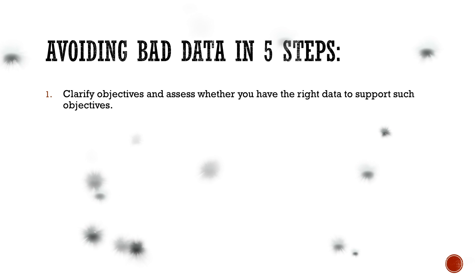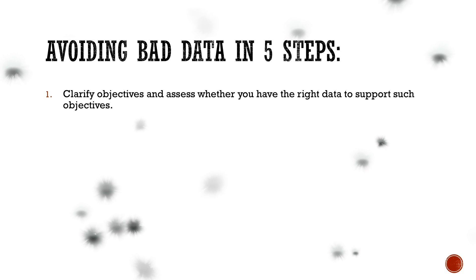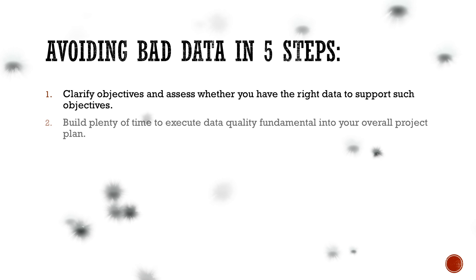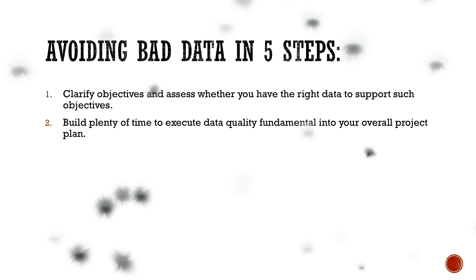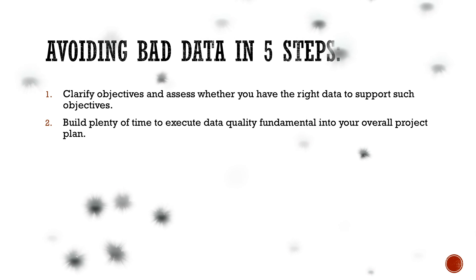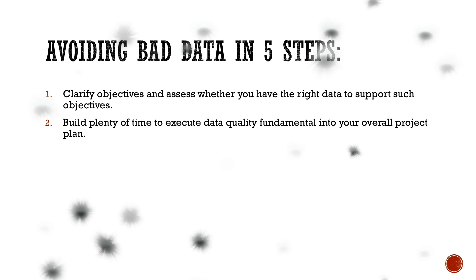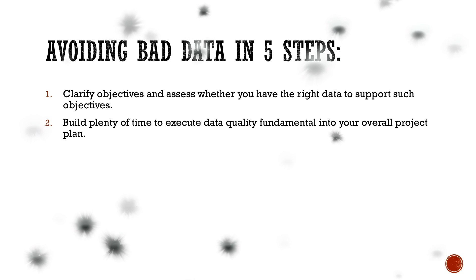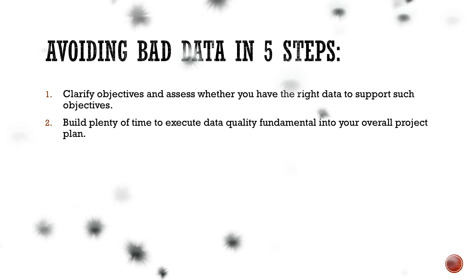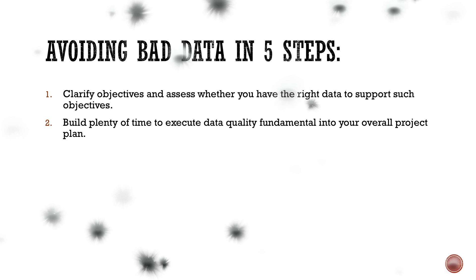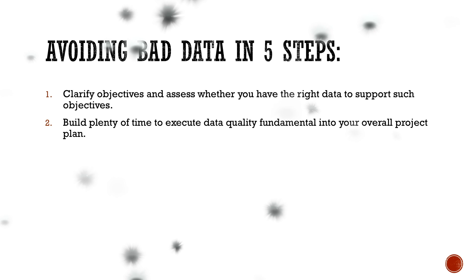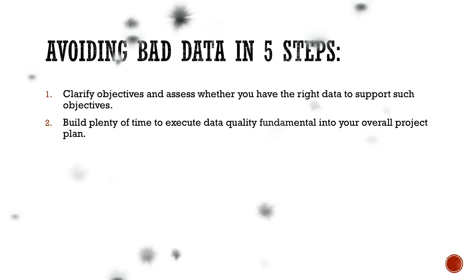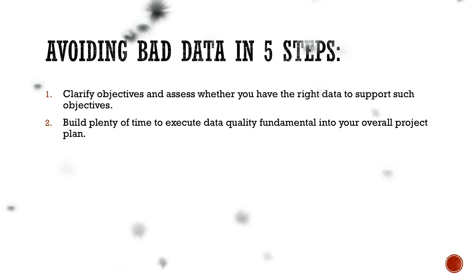If the data falls short, find new data or scale back the objectives, or both. Build plenty of time to execute data quality fundamentals into your overall project plan. For training, for every one person-month of building a model, you should spend four person-months of cleaning. For implementation, it is best to eliminate the root causes of error. The article suggests to start this work as soon as possible, but at least six months before you let your predictive model loose.